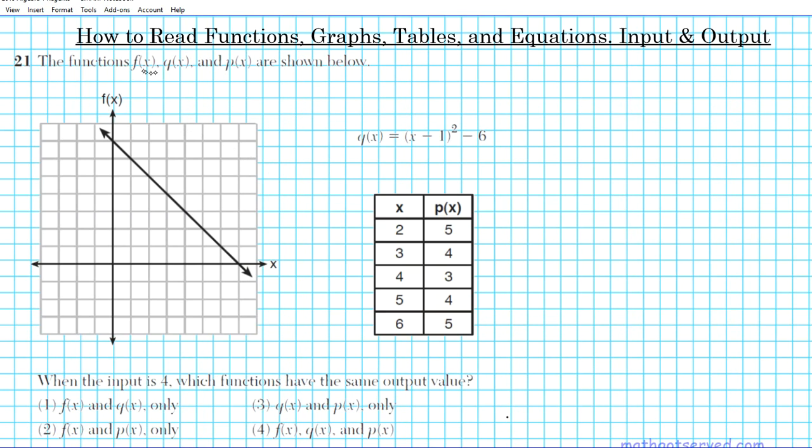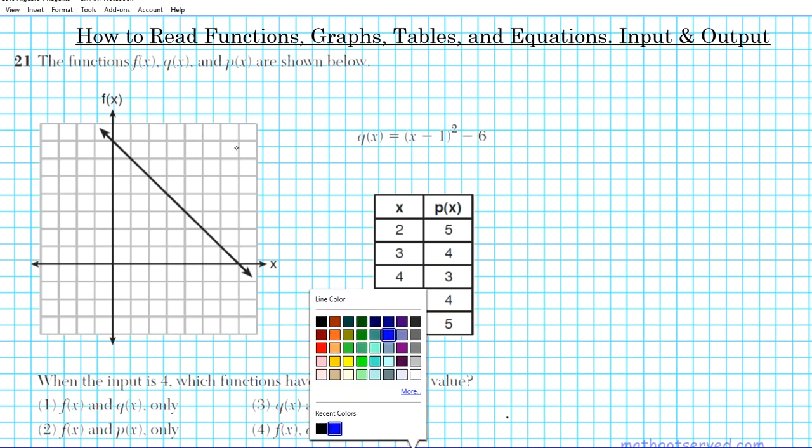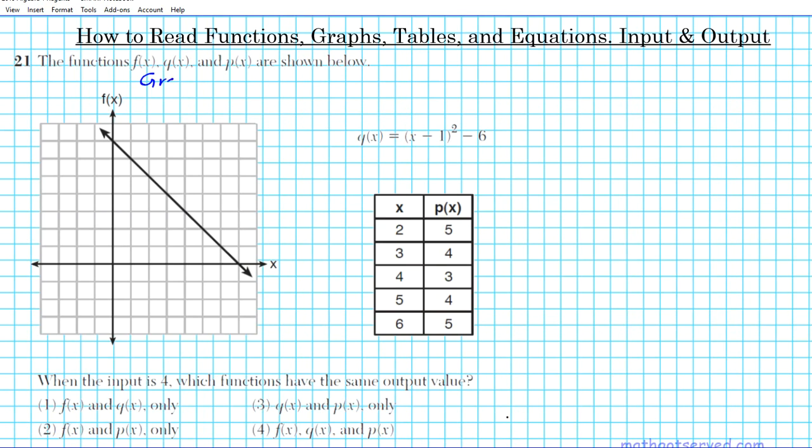Alright so we're going to attack them one by one. We're going to start with f(x), f(x) is the graphical representation. So this is a graph that we have right here. So when we're dealing with graphs, how do you determine what the output is with a specified input? In this particular problem the input is 4, so the input is 4, we automatically know what x is. If the input is 4, the input is x. So x is going to be 4.